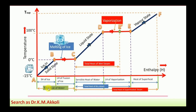The total heat of water refers to the heat added from the ice point at minus 15 degree Celsius to 0 degree Celsius water. The total heat of dry steam is the amount of heat added from 0 degree Celsius water up to the saturated temperature of steam. The total heat of superheated steam is the heat added from 0 degree Celsius water up to the superheated steam temperature. The heat added only beyond the saturated steam is called heat of superheat.